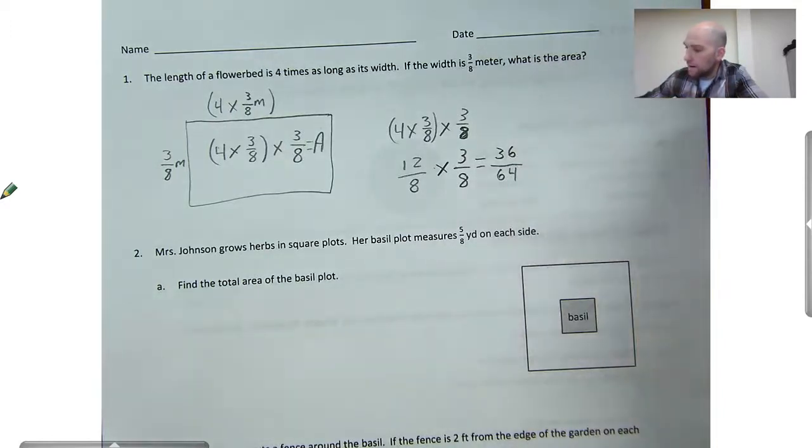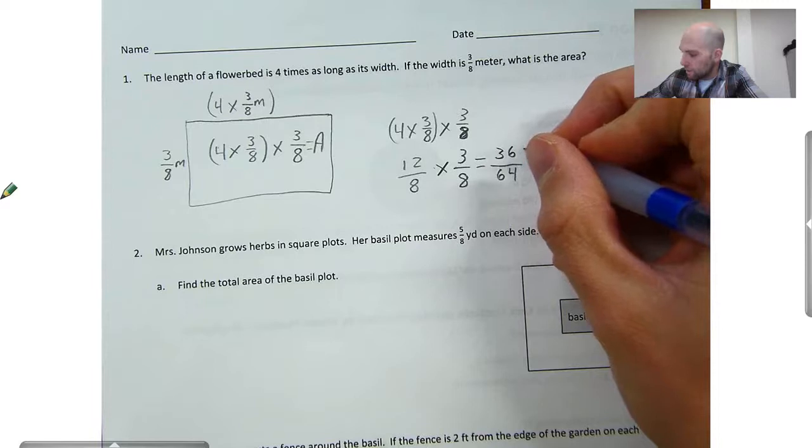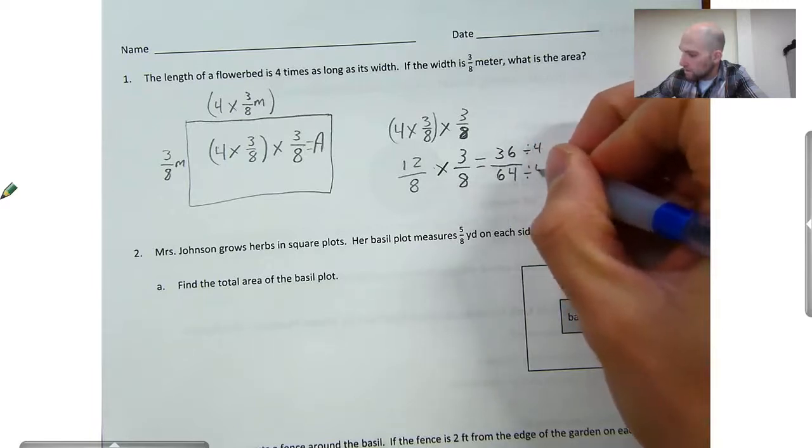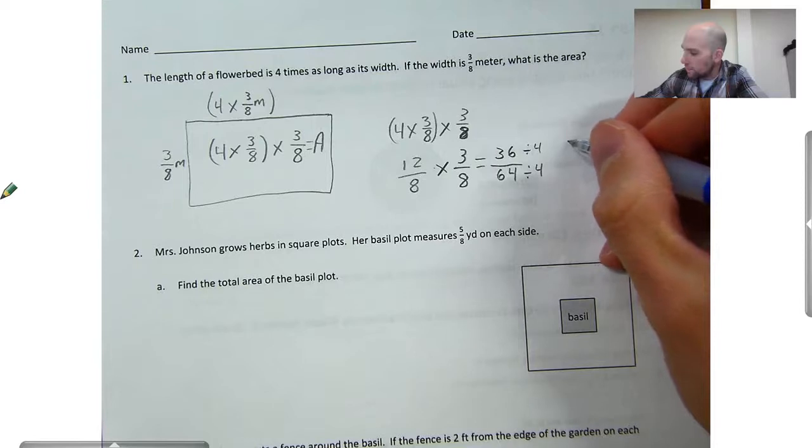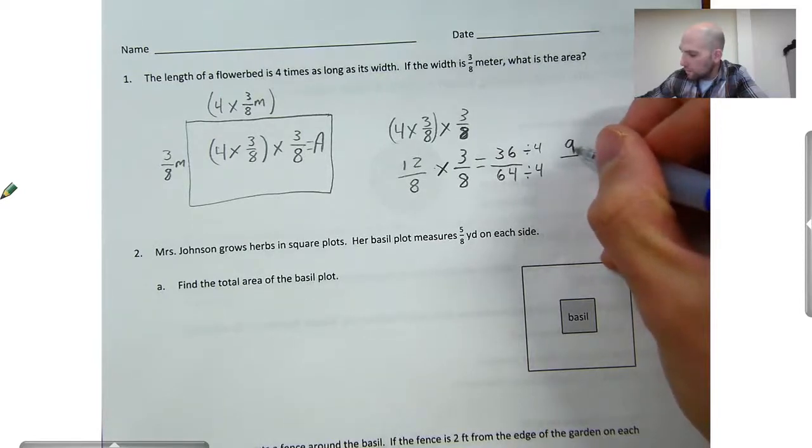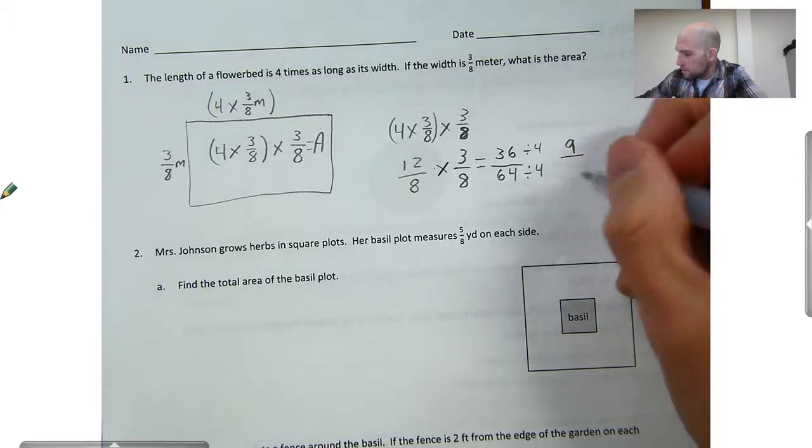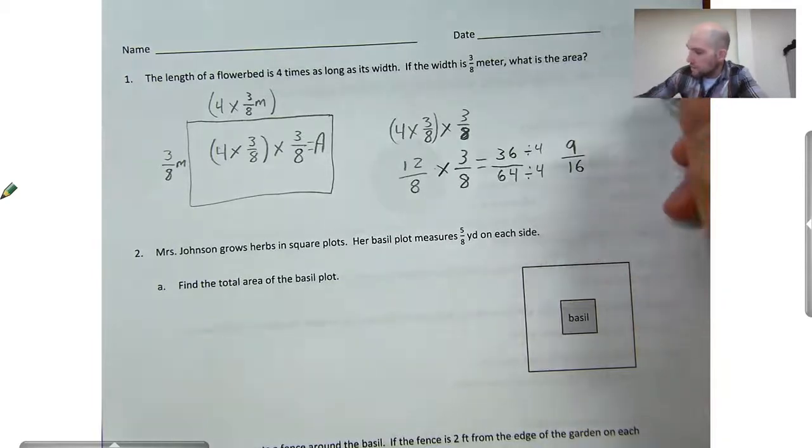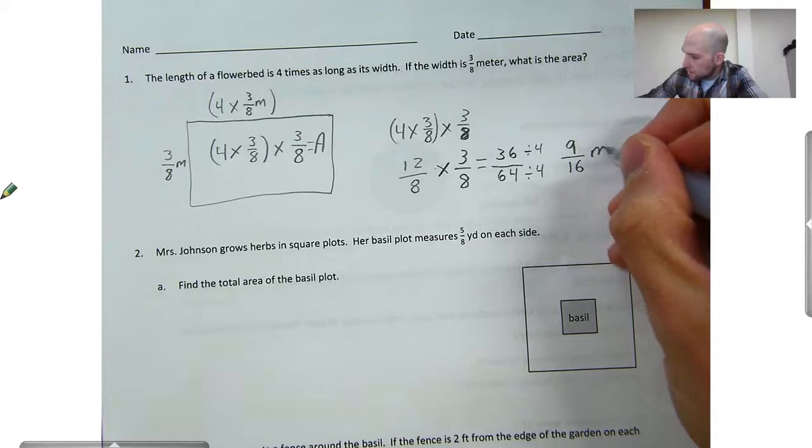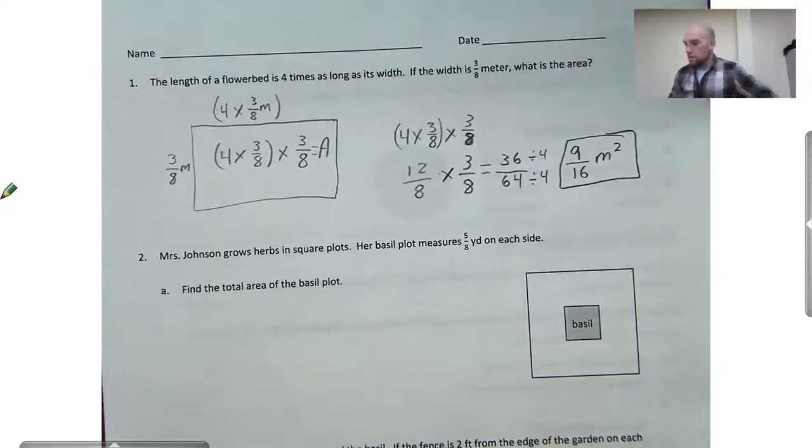Now I can divide both of those by, let's see, I can divide both of them by four, it looks like. To simplify this, we could leave it as 36 64ths of a meter, but if we wanted to simplify it, 36 divided by four would give me 9 and 64 divided by four would give me 16. I'll end up with 9 sixteenths. They'll be in square meters. So 9 sixteenths square meters will be my area for that flower bed.